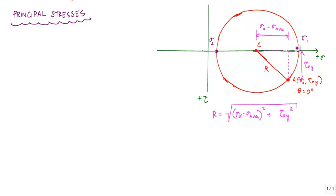And so if I want to calculate sigma 1, since I know this point C is sigma average, comma 0, sigma 1 is just sigma average plus the distance to that point, which is the radius of the circle. And then sigma 2 is sigma average minus the radius of the circle.